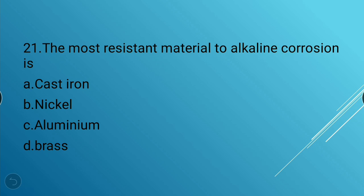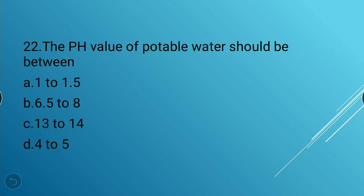Next question: The most resistant material to alkaline corrosion is — cast iron, nickel, aluminum, or brass. The answer is nickel — the most resistant material to alkaline corrosion is nickel.